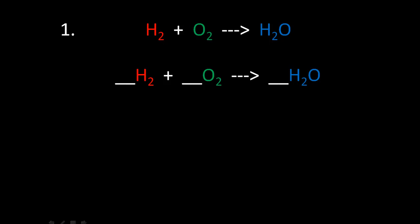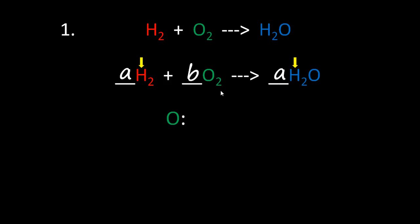That would be hydrogen and also oxygen, but we'll try hydrogen first. Since hydrogen is already balanced — there are two atoms of hydrogen on the left and two on the right — we will put the same letter coefficient 'a' on both sides. In step two, we put a different letter coefficient 'b' in the remaining blank line.